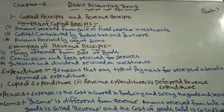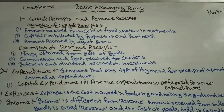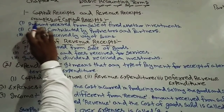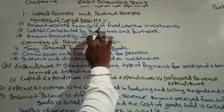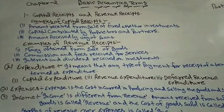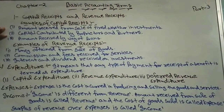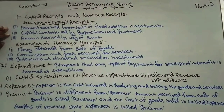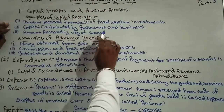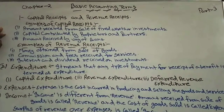We will read here about what capital receipts and revenue receipts exactly are, with some examples. The first example is: payment received from sales of fixed assets or investments. The amount we receive by selling our fixed assets and investments is called a capital receipt.